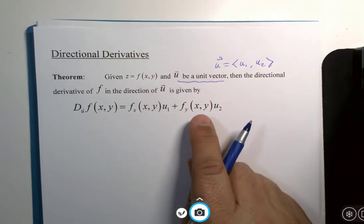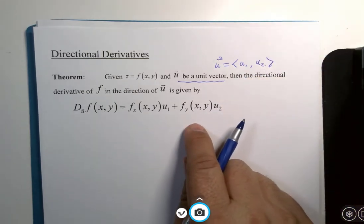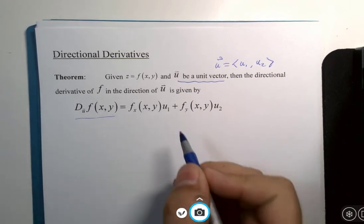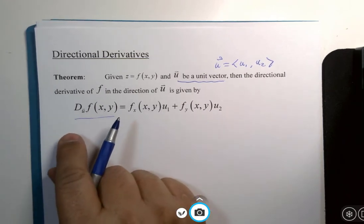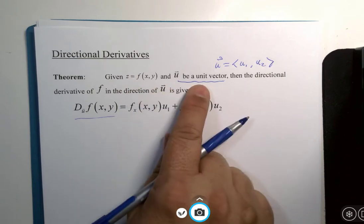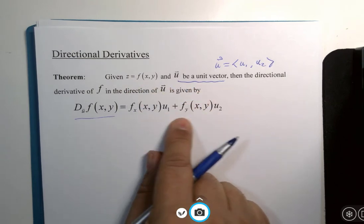Has to be a unit vector, then the directional derivative, or the change in z as we go the direction of the unit vector is given by the following formula.